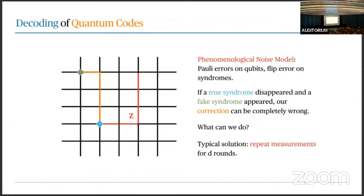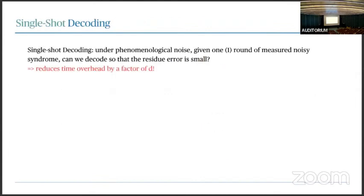The question we want to discuss today is: is there an alternative? Measuring syndromes for d rounds is a pretty heavy time overhead for decoding. Is it possible to do this decoding with only one round of noisy syndrome information? This is the idea of single shot decoding: given just one round of syndrome information, can I still reasonably do this decoding task? Reasonable means that the residual error is small — there's no way to do perfect decoding when your syndrome is wrong, but can I at least guarantee the residual error is small?